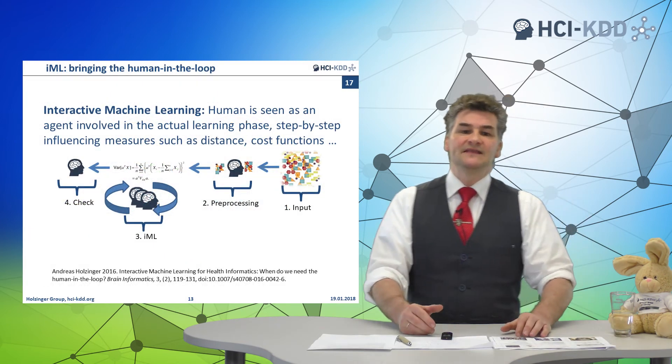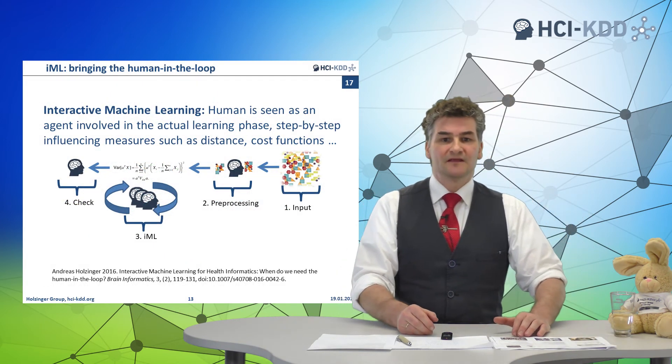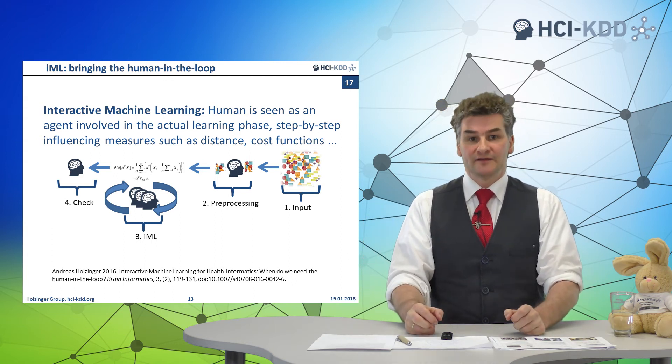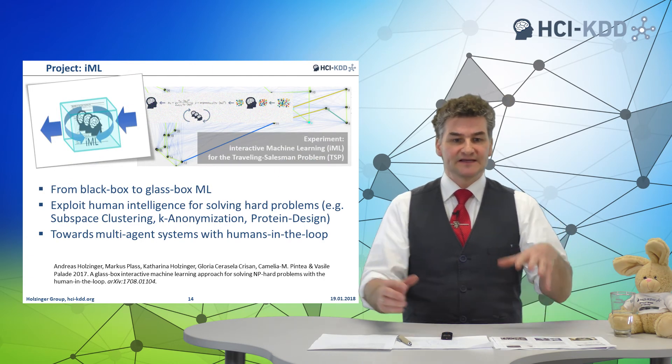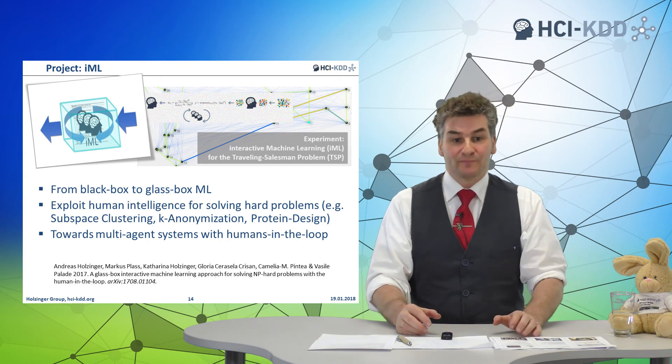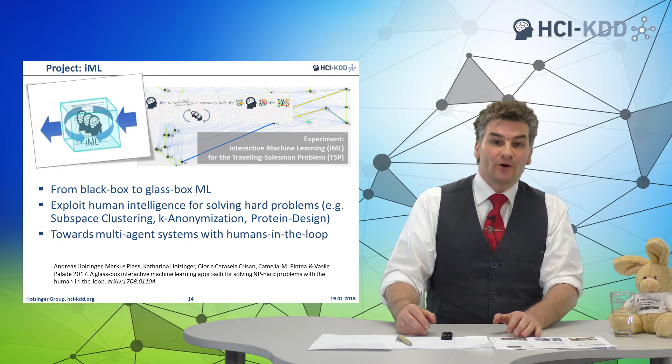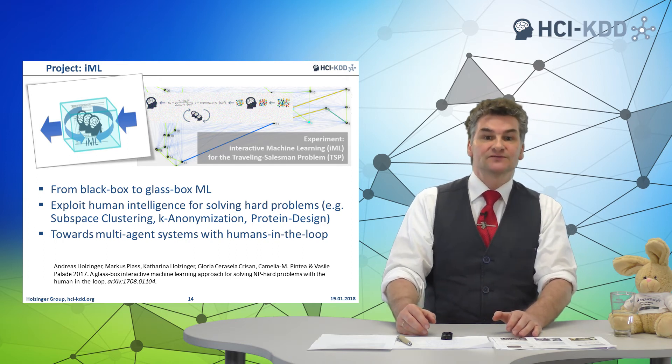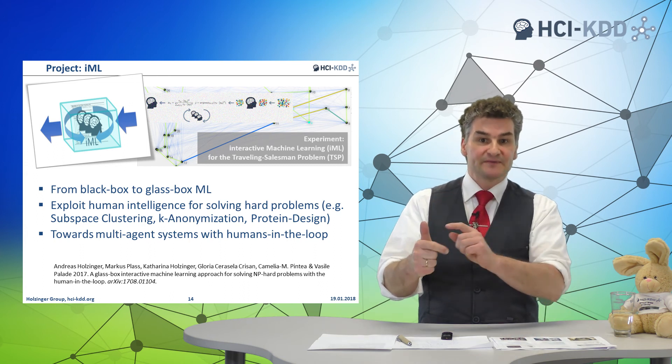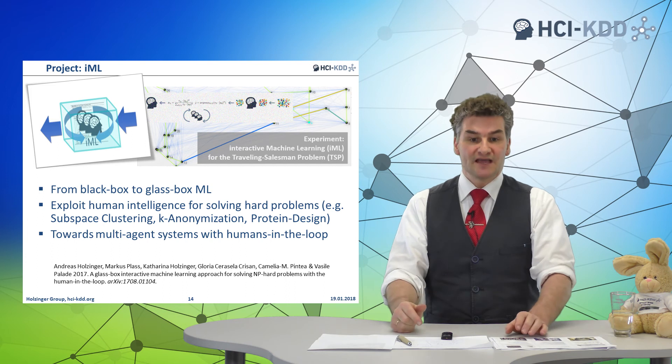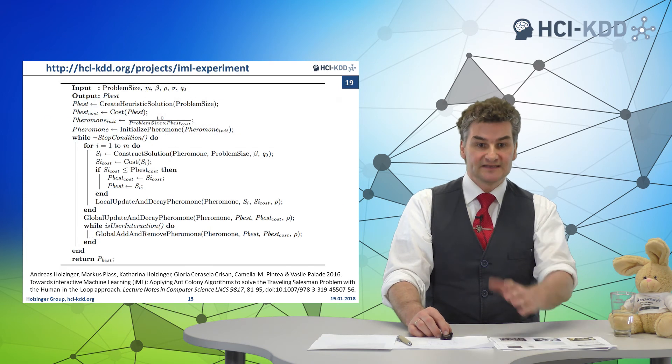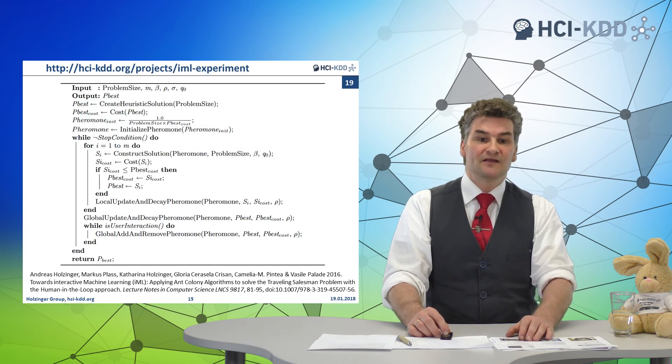We have pioneered in the interactive machine learning approach. That means that we directly involve a human into the algorithmic loop. And this has some advantages. For example, we can open the black box approaches towards a glass box approach, and we can exploit human intelligence for solving, to help solve NP-hard problems, for example, in subspace clustering, in k-anonymization, protein designs. And this human in the loop, we have set up an experiment. You can see the URL here, and you can play around with it.